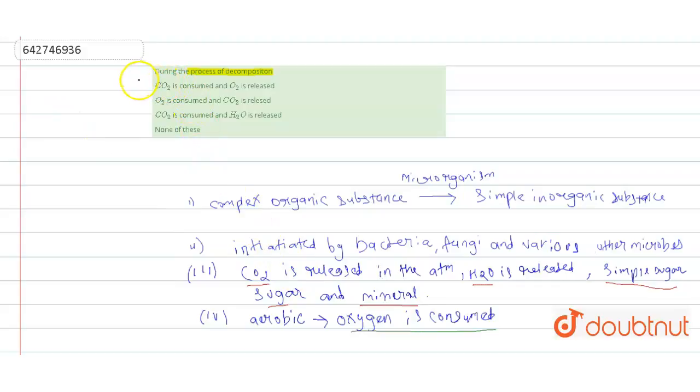The first option says that carbon dioxide is consumed and oxygen is released. This option is wrong because as we have discussed, carbon dioxide is released and oxygen is consumed. So this option is wrong.